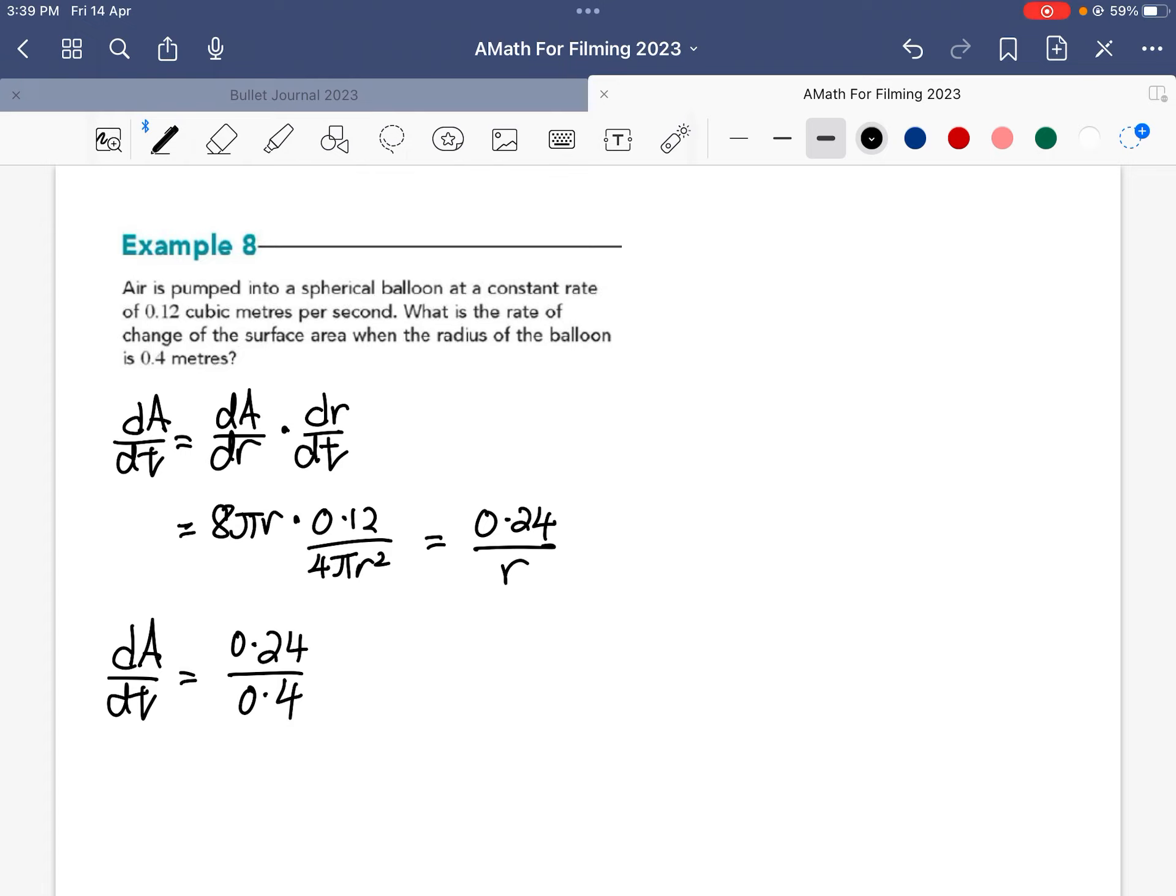And the question is asking when the radius is 0.4 meters. Hence, when my radius is 0.4 meters, I divide by 0.4. The rate of change of area with respect to time is 0.6 meters squared per second. So that means that the area is increasing at the rate of 0.6 meter squared per second when the radius of the balloon is 0.4 meters. And that's it.